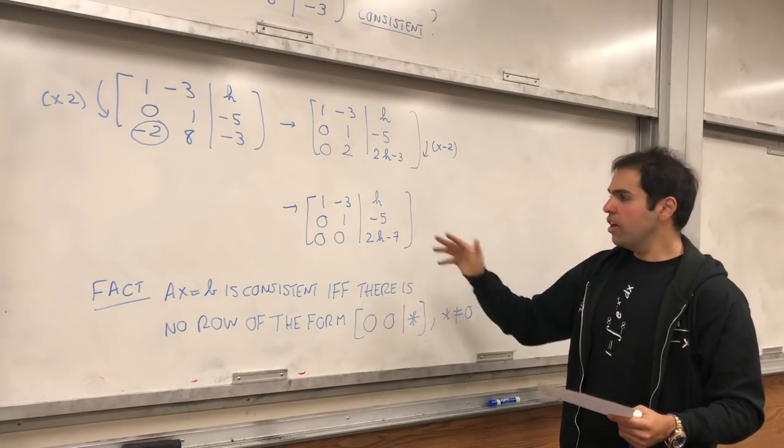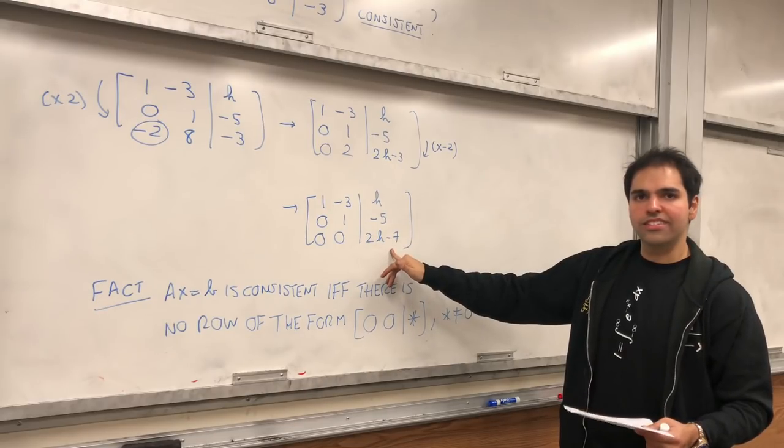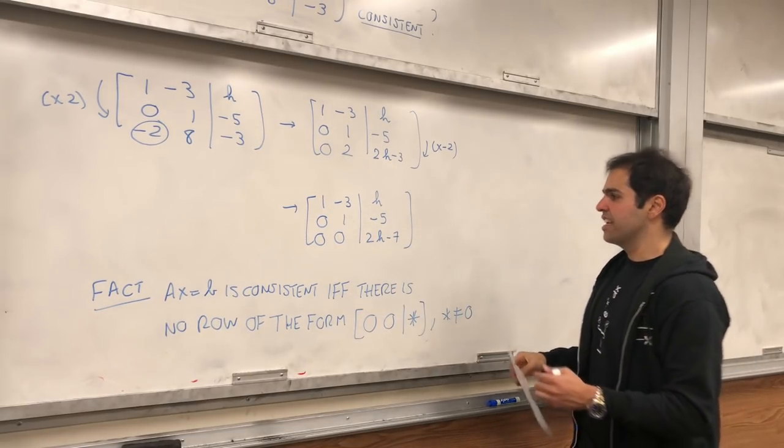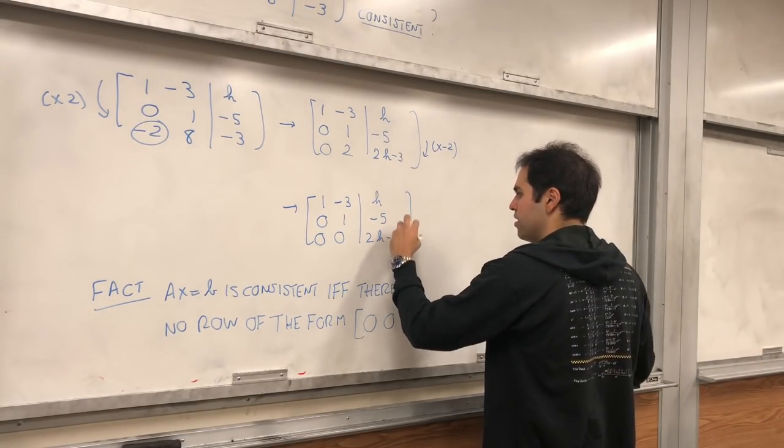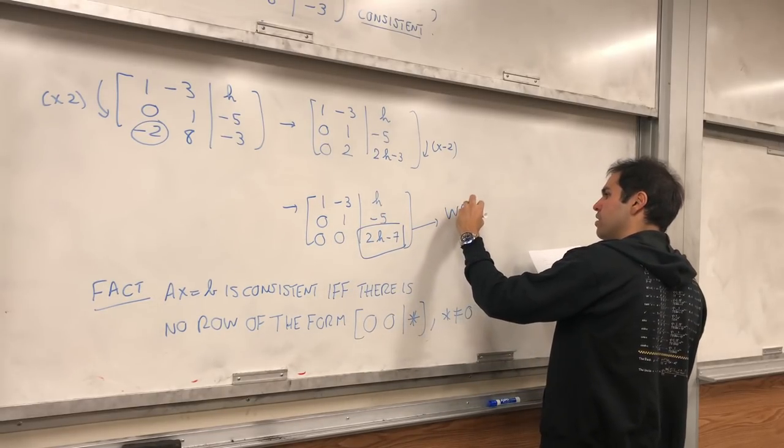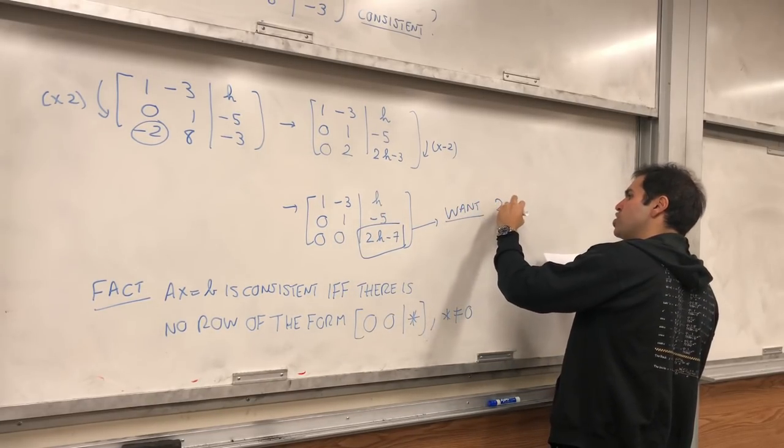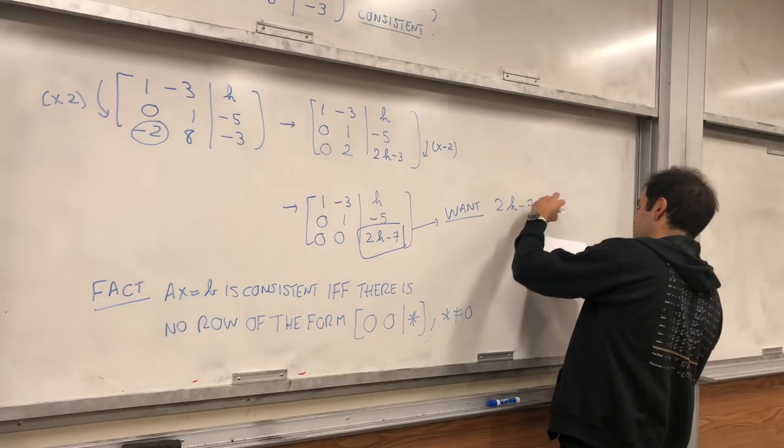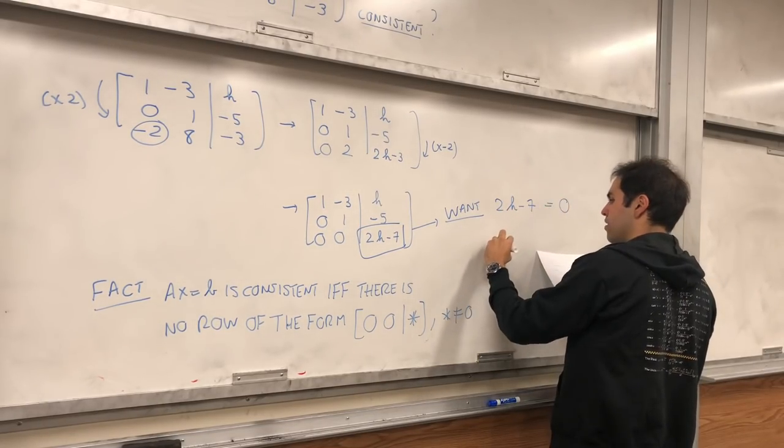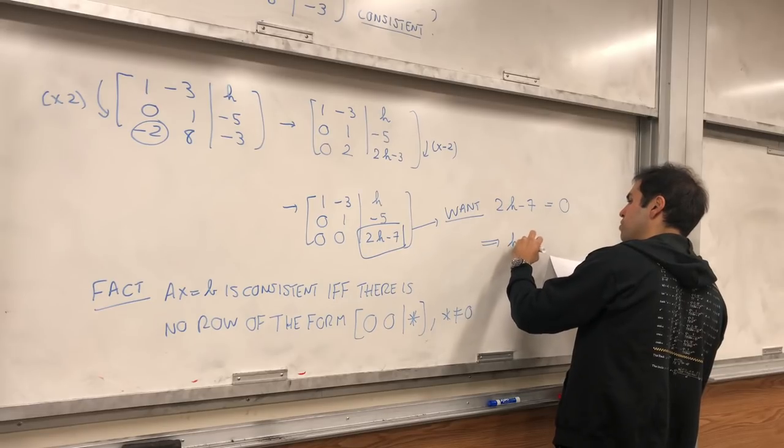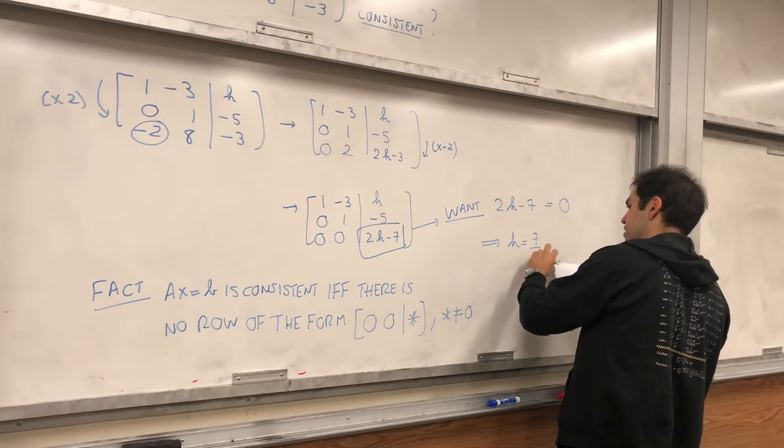In other words, the only way this is consistent is if this thing is zero. So in other words, we want 2h - 7 to be zero, so h would be 7 halves.